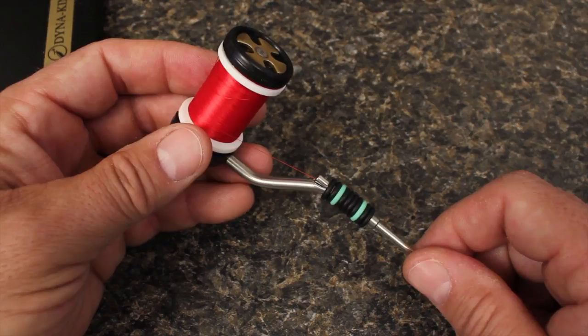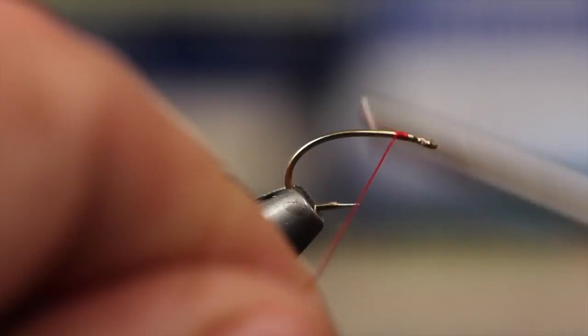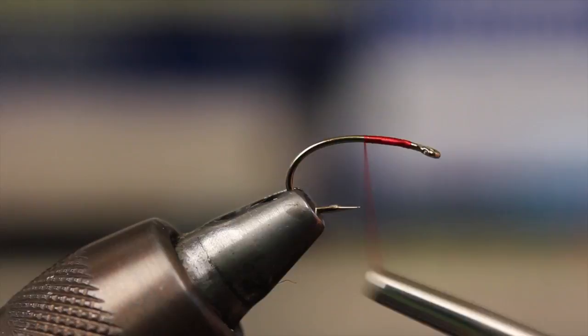For thread, UTC 70 in red works well. Start your thread on the hook shank, leaving a little bit of space behind the eye and take wraps rearward to the hook point.